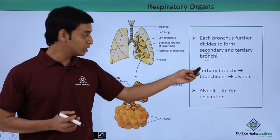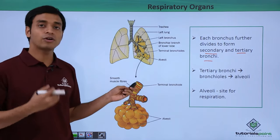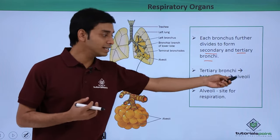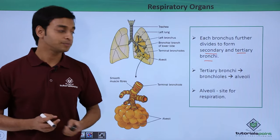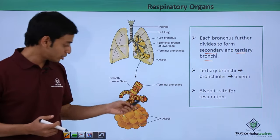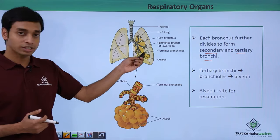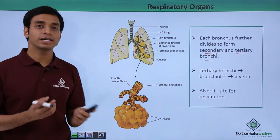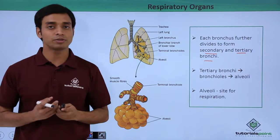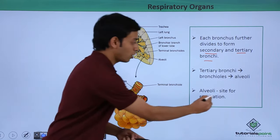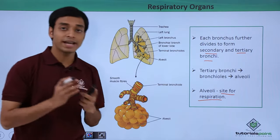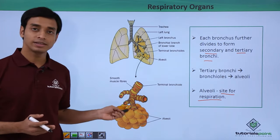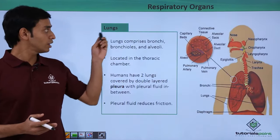The tertiary bronchi leads to the formation of bronchioles. The terminal part of each bronchiole is covered by structures known as alveoli. As you can see here, this structure has been zoomed in — alveoli are bag-like, irregular shaped structures and are the actual sites for respiration.